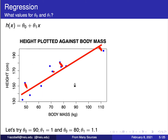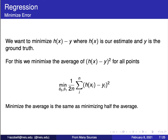We're going to compute the error to see how good our line is doing. Remember that this line is basically a straight line, a function of some variable plus something times x. So how do we formalize this? We want to minimize h(x), which is our prediction, our line.